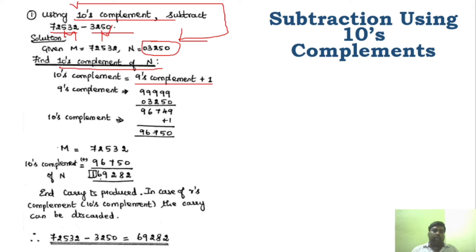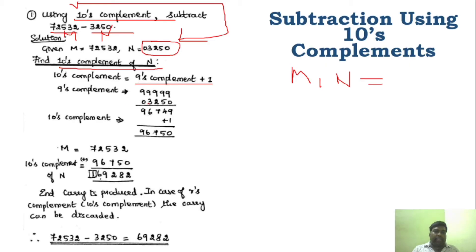To find the ten's complement of N: first find the 9's complement by subtracting each digit from 9, then add 1. So using the 9's complement — subtracting from 99999 — and then adding 1 gives us the ten's complement, which is the R's complement of the subtrahend.